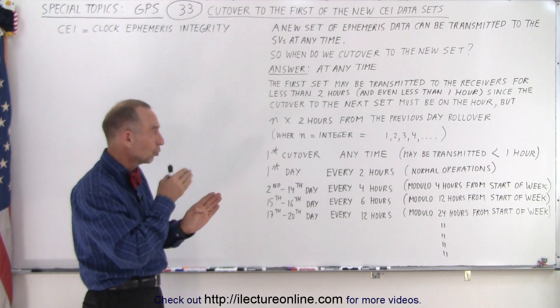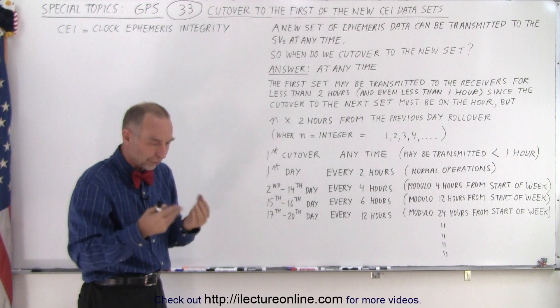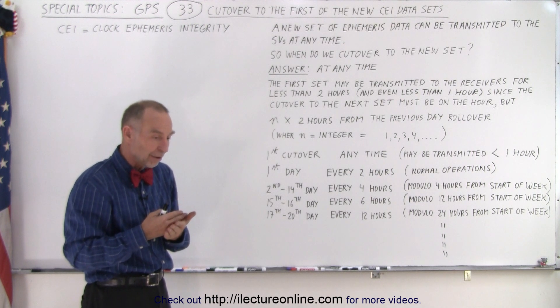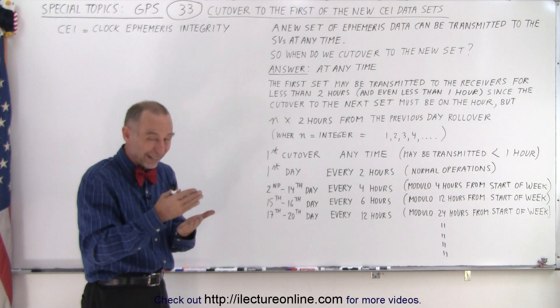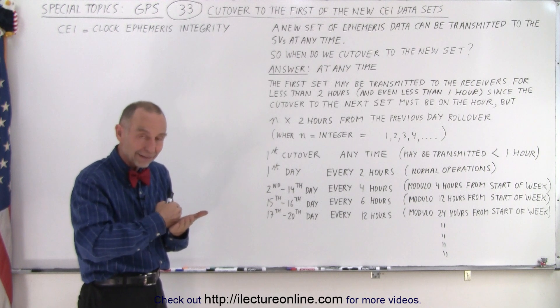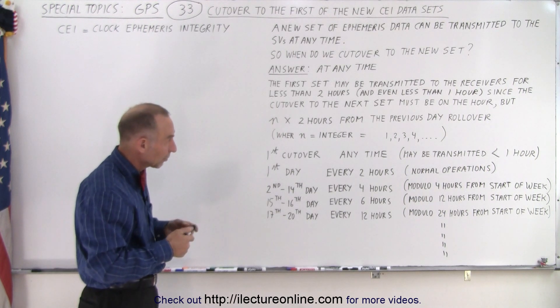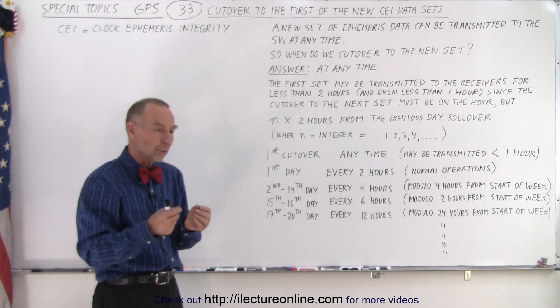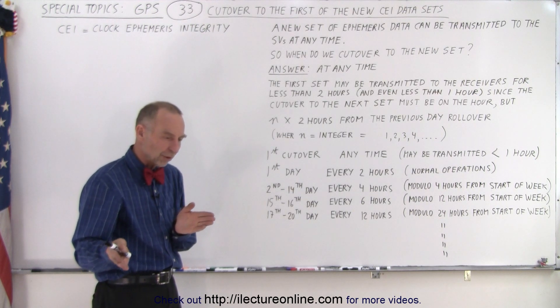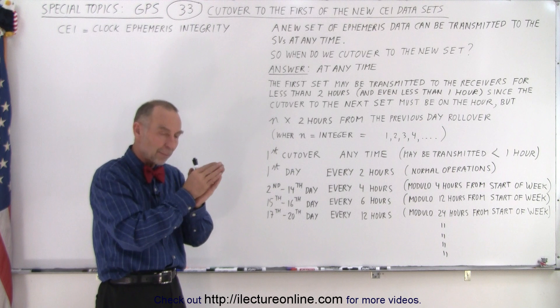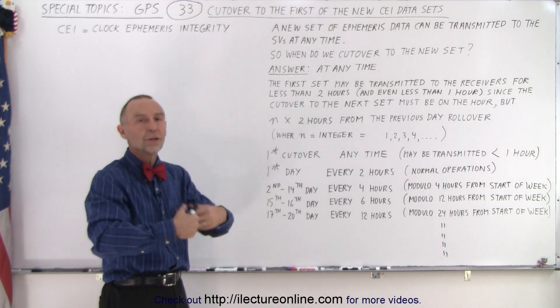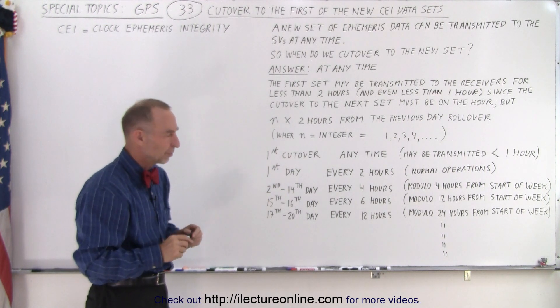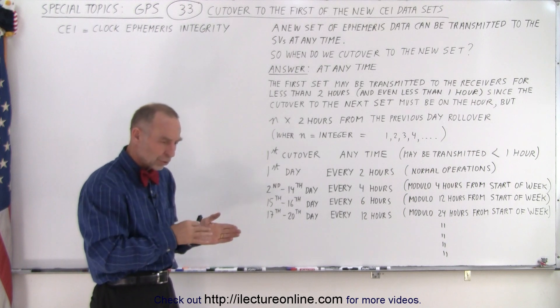I'm not quite sure if we actually do wait for the two-hour period, or n times two-hour period after the last midnight, to cut over the next data set, which would then mean that the first data set is transmitted anywhere from two hours or less than two hours, all the way down to less than an hour. But also what they're indicating is that if that's not the case, then the first data set would be transmitted for the first so many minutes till the top of the hour, and then you would cut into the next data set.